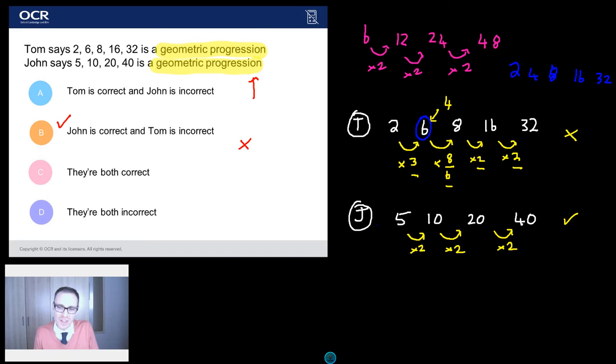And why might you think John is wrong? Well, this is quite interesting. You might not know that geometric progressions can start on any number. You might think they have to start on 2. But they don't. As long as they go up by the same amount each time, you're absolutely fine.